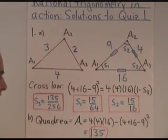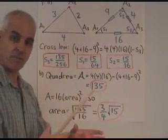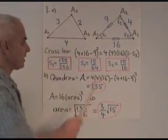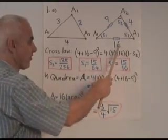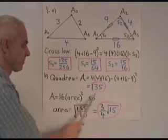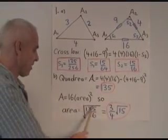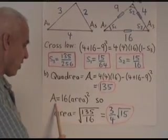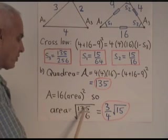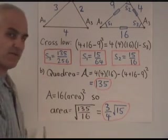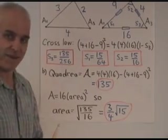The quadrature of the triangle is the difference between the two sides of the triple quad formula. It's 4 times this, times this, minus this combination, 4 plus 16 minus 9 squared, which turns out to be 135. The area is given by this: quadrature is 16 times area squared. So the area is the square root of 135 divided by 16, which turns out to be 3 over 4 times root 15.